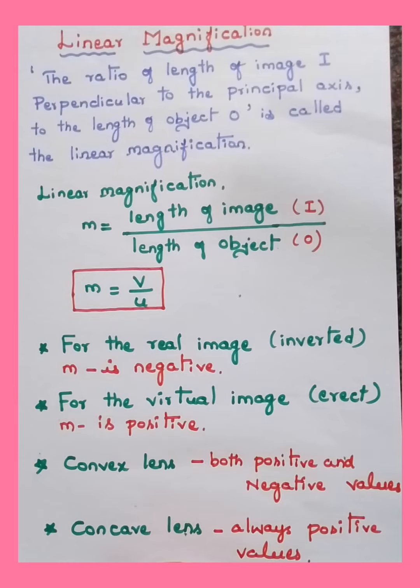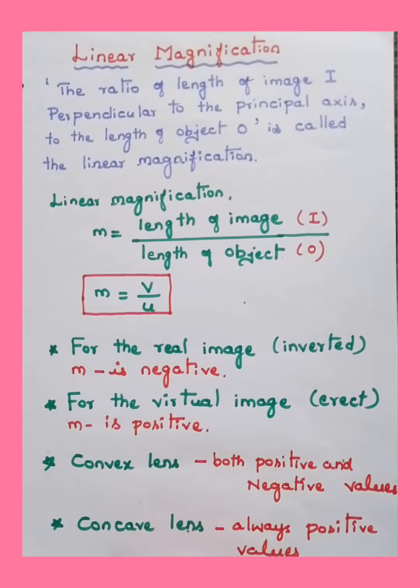We define linear magnification like this: the ratio of the image I perpendicular to the principal axis to the length of the object O is called linear magnification. It is represented by small letter m. Linear magnification m equals length of image I by length of object O.